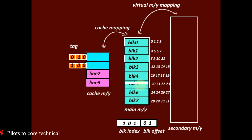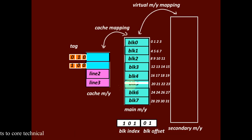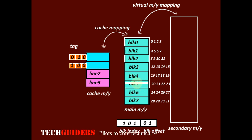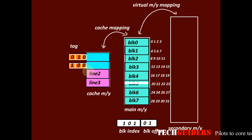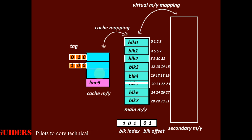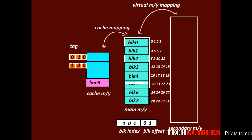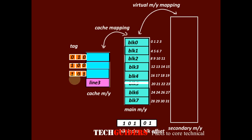On a cache miss, we access word 1 of block 5 from the main memory. Then, to help future references, main memory block 5 is copied to the cache. Since we are using associative mapping and there are 3 free cache lines, we have the freedom to choose any of them. Suppose we choose line 2 — the block index 101 is then associated as the tag for that cache line.